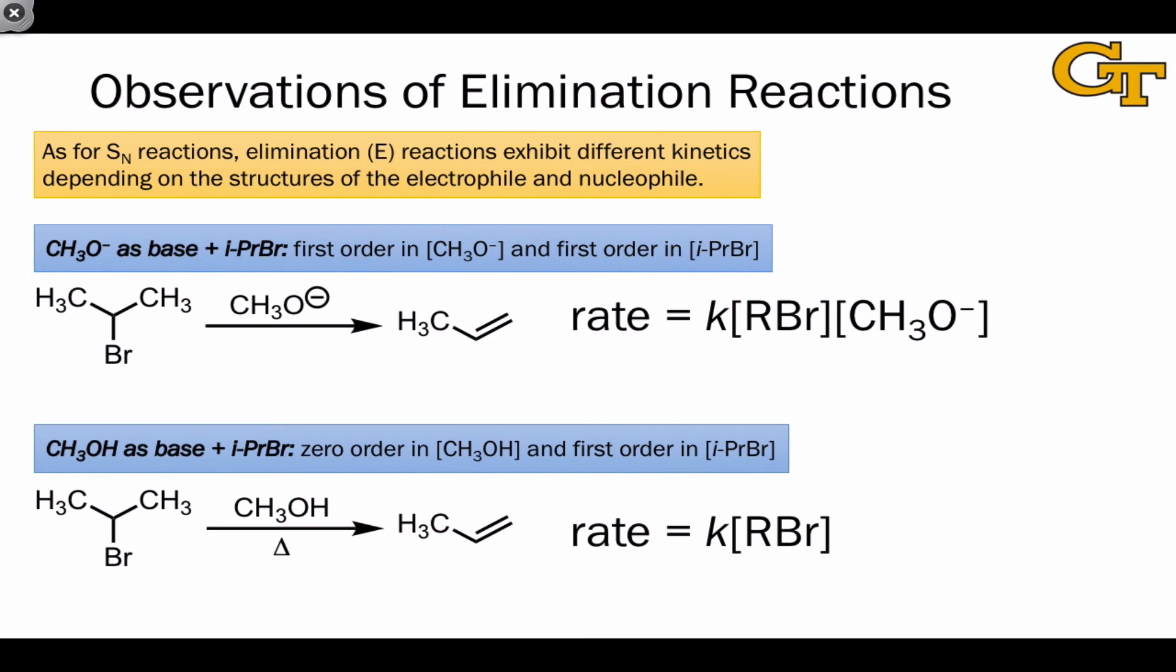And this is exactly analogous to what we've already seen in nucleophilic substitutions. Over the next couple of videos, we'll survey these two mechanisms in detail. Because the rate law has two terms in the first case, implying a bimolecular rate-determining step, the first mechanism is called E2, and because the second mechanism involves only the alkyl halide in the rate-determining step, a unimolecular rate-determining step, the second mechanism is called E1.